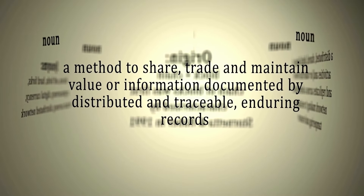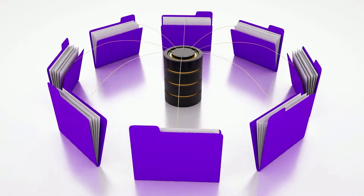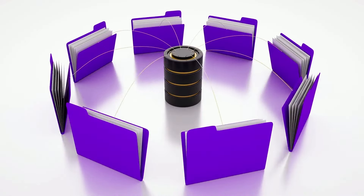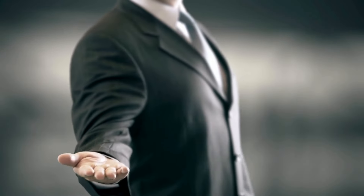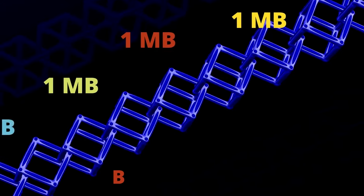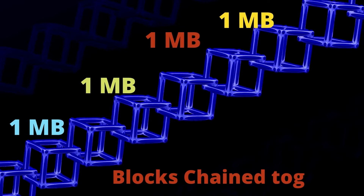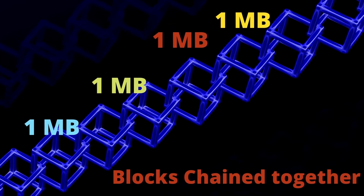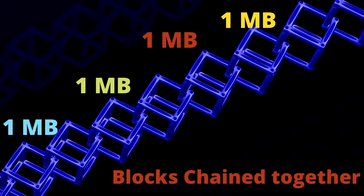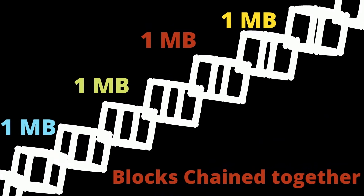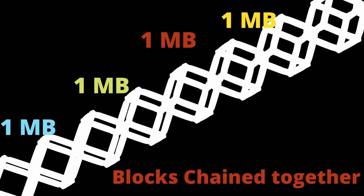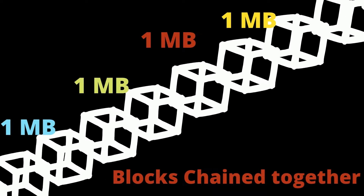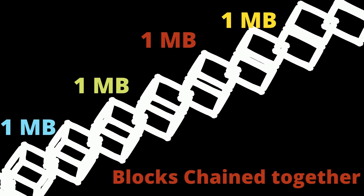Blockchain is not too complex to understand. Simply put, it is just a database distributed across a network of computers to store data securely, also called distributed ledger technology. While general databases structure data into tables, blockchain stores data in blocks with chunks of data. These blocks have a certain size limit, and once filled with fresh data they are added to the already-filled blocks like a chain link in chronological order — thus deriving the name blockchain.